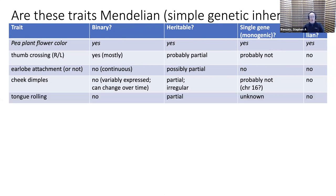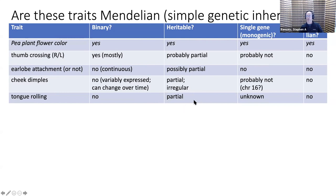Tongue rolling is also not a binary trait — some people are partial tongue rollers, so there's a continuum of phenotypes. From family studies, this trait is only partially inherited, with the rest presumably being environmental. The genetics is unknown, but if it's not binary and not fully heritable, it can't be Mendelian in the classical sense.